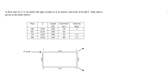Let's read the question slowly. We have a flow rate of 17.5 CFS entering the pipe system at A, and it exits at B and C. Pipe data is given in the table for pipes AB, BC, CD, and DA. We're given the friction factors, which are all the same. When you're given the friction factor, think of the Darcy-Weisbach equation, which relates the head loss due to flow — we'll use that as we proceed.